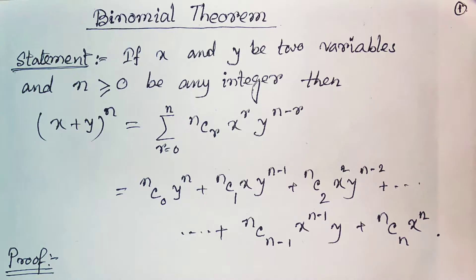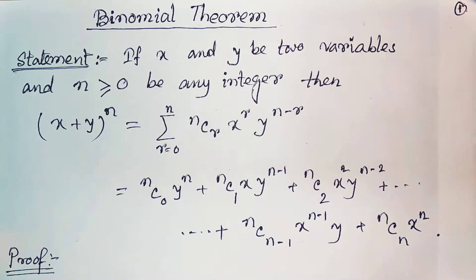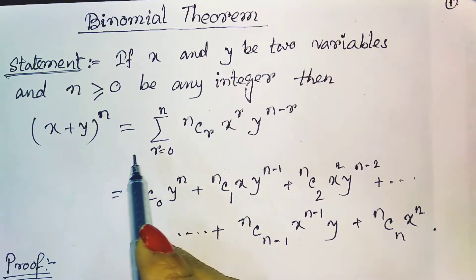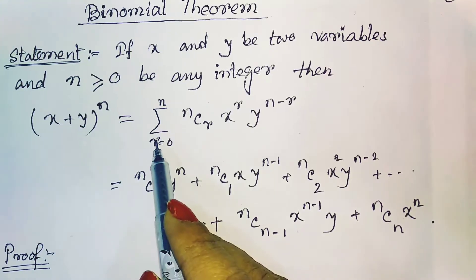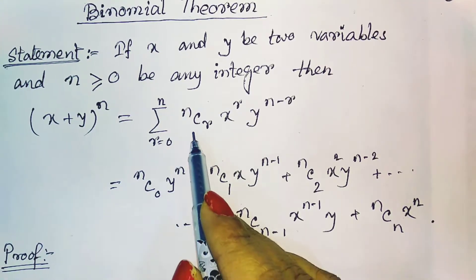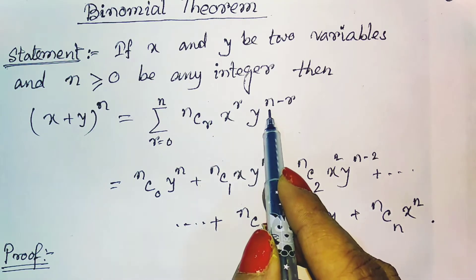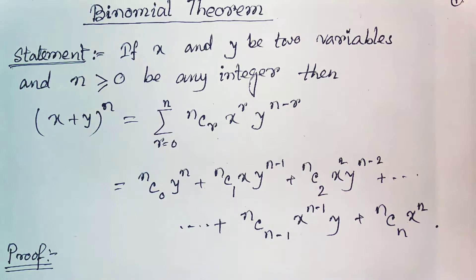The statement for the theorem is: if x and y be two variables and n ≥ 0 be any integer, then (x + y)^n is equal to the summation of nCr · x^r · y^(n−r).